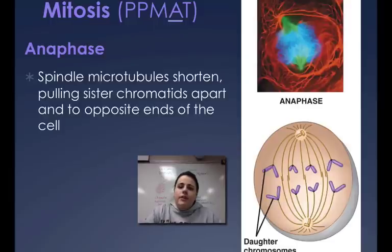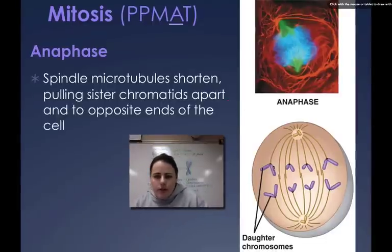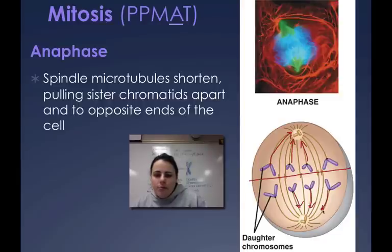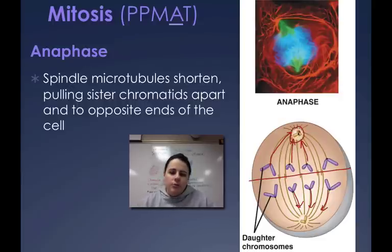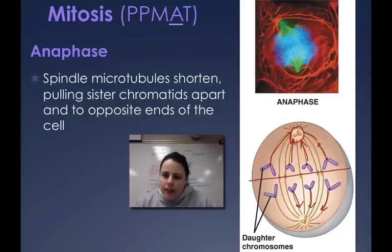After metaphase, we go into anaphase — 'ana' means away. The chromosomes are going to be pulled away from their partner as the microtubules shorten. Think of it like fishing: the centrioles are like a fishing pole, the mitotic spindle microtubules are the line, and the chromosomes are the fish. The centrioles are reeling in the chromosomes. You can see a separation between where they used to be down the middle.